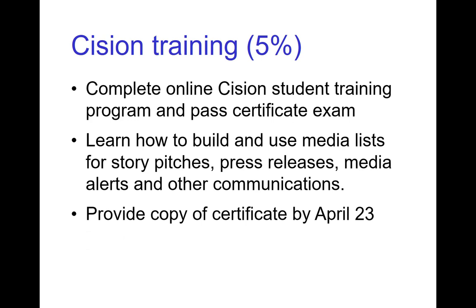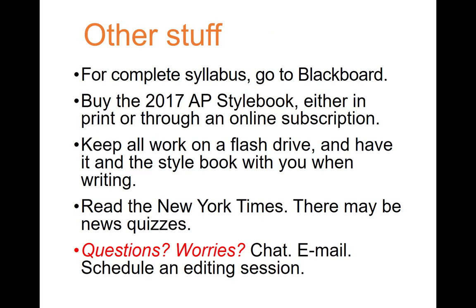To get credit for Cision Training, you'll need to complete the course, pass the final exam, get a copy of your certificate, and email it to me by April 23rd. There is a separate presentation on how to do Cision. You should look at the syllabus on Blackboard and download the PDF. If you need the AP Stylebook, you can buy a print copy at the university bookstore, order it online, or get an online subscription. I recommend the online subscription because it's always with you and you can look things up right from your computer.